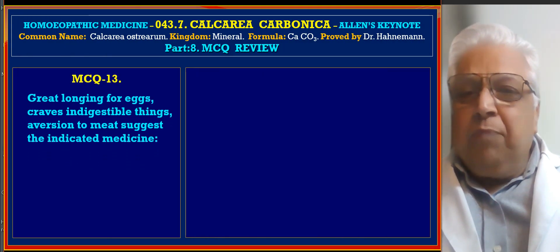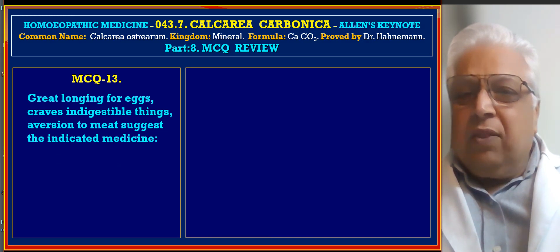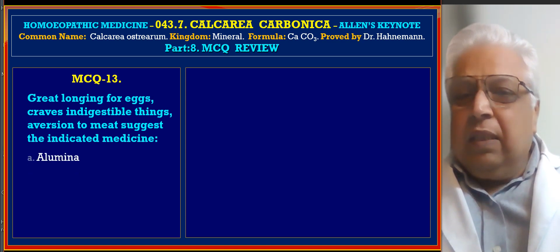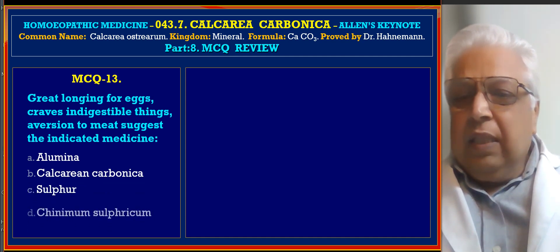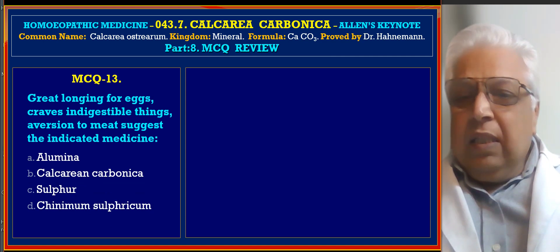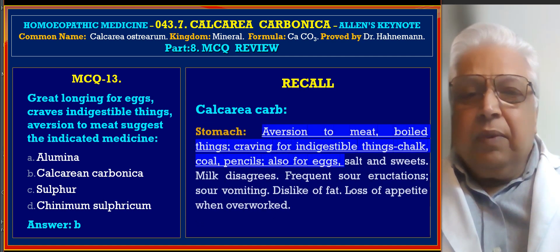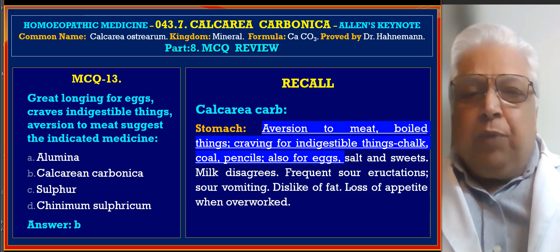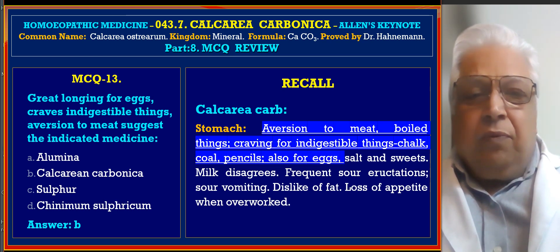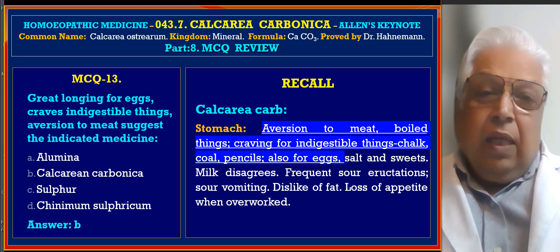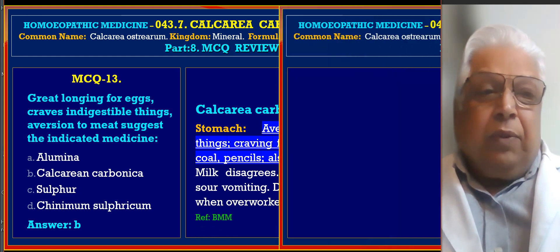MCQ 13: Great longing for eggs, craves indigestible things, aversion to meat — the indicated medicine among Alumina, Calcarea Carbonica, Sulphur, and Chininum Sulphuricum. Answer is B, Calcarea Carbonica. Reference from Boericke's Materia Medica, stomach section: aversion to meat, craving for eggs, craving for indigestible things such as chalk, coal, and pencils.